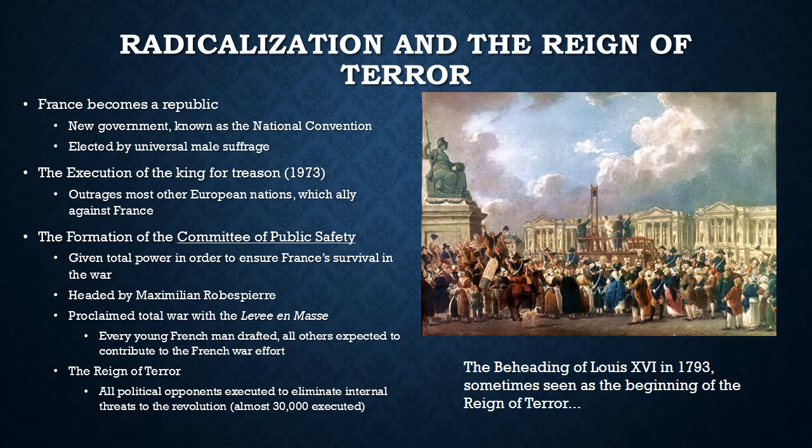In response to all this instability and the threat to the revolution, the French Revolution underwent a period of radicalization. The first thing that happened was France became a republic — the king was no longer in charge — and the new government known as the National Convention was elected by universal male suffrage; any man in France got to vote. Second, the newly elected National Convention decided as its first measure to execute the king for treason. In 1793, the king was executed via guillotine, which outraged basically every other nation in Europe, and they all allied against France and started fighting a war against her.